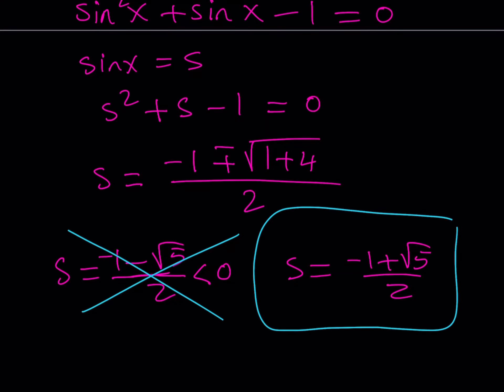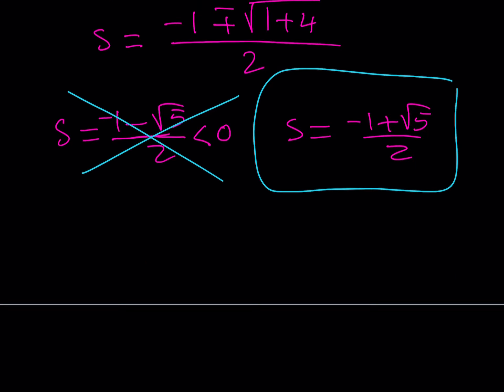So the only value we have left is this one. This means that sine x equals root 5 minus 1 over 2. Is this between negative 1 and 1? Well it does because definitely this is going to be less than 1 and greater than negative 1.